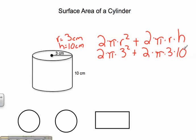Now 3 squared is 9. 9 times 2 is 18. So here I have 18 pi. Then here, 3 times 10 is 30, times 2 is 60. So here I have 60 times pi. When I add 18 times pi and 60 times pi together, I get 78 pi,